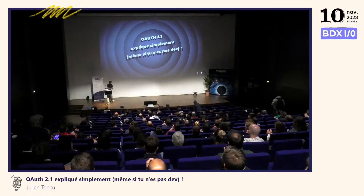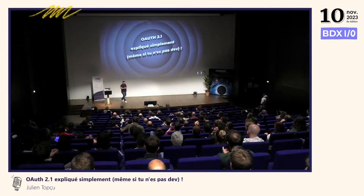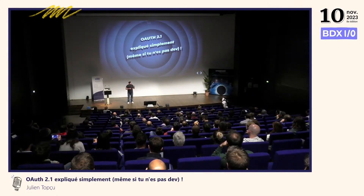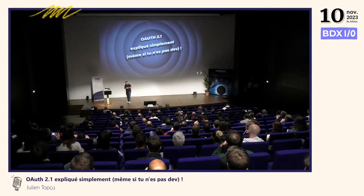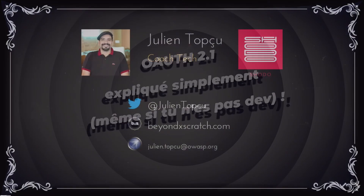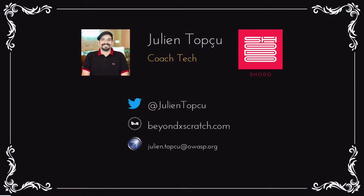Bonjour à tous et bienvenue dans ce voyage éducatif en 1932, au cours duquel nous allons apprendre le fonctionnement de OAuth 2.1 à travers des exemples de la vie réelle. Je me présente, je m'appelle Julien Topsu et je serai votre guide lors de cette expérience cinématographique rendue possible par les studios Shodo. C'est aussi une SN parisienne et nantaise. Mais aujourd'hui, ce qui nous intéresse, c'est le Grand Budapest Hôtel.